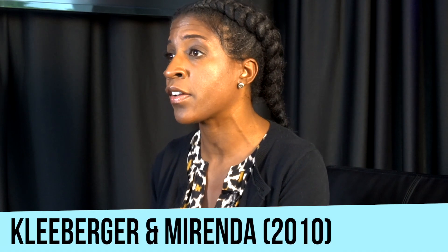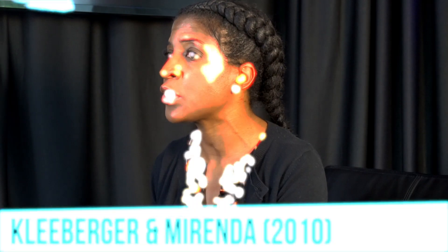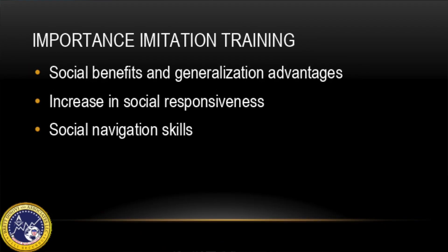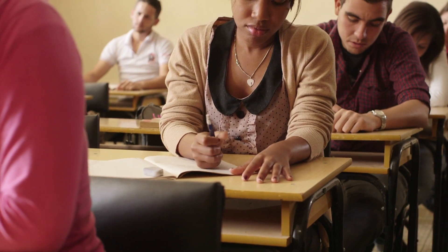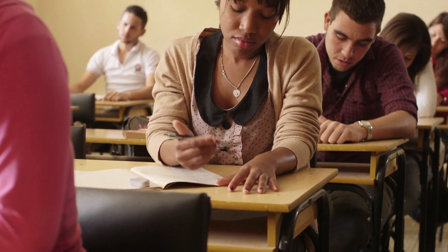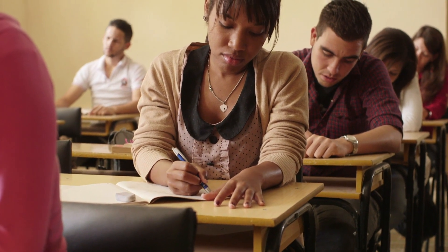In the Cleaverman Miranda article, the researchers described problem-solving as an extension of social responsiveness and as a social navigation skill. This refers to imitation being used as social problem-solving. For example, if a student is unsure of the expected response, he or she can refer to a peer.